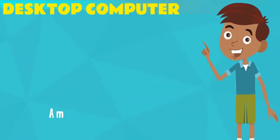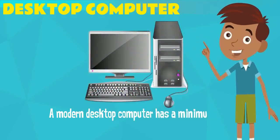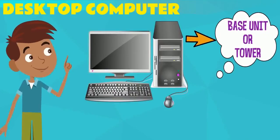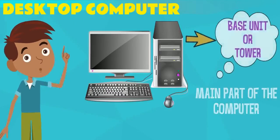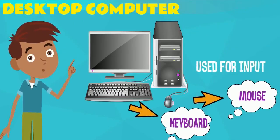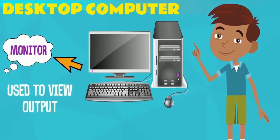A modern desktop computer has a minimum set of parts. The base unit or tower is the main part of the computer. A mouse and a keyboard are used for input. A monitor is needed to view output.